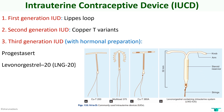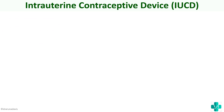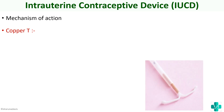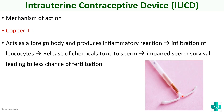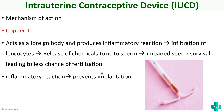Just like in other methods, what we are most concerned with is the mechanism of action — how do these devices provide contraception. For the second generation copper T, as you can see in the image, it has copper. This copper acts as a foreign body and produces inflammatory reactions. Because of this inflammatory reaction, there is infiltration of leukocytes, and chemicals are released that are toxic to sperms, impairing sperm survival and leading to less chance of fertilization. This creates a very hostile environment — leukocytes ready to engulf sperms and chemicals toxic to sperms — making it very difficult for sperms to survive. This prevents fertilization.